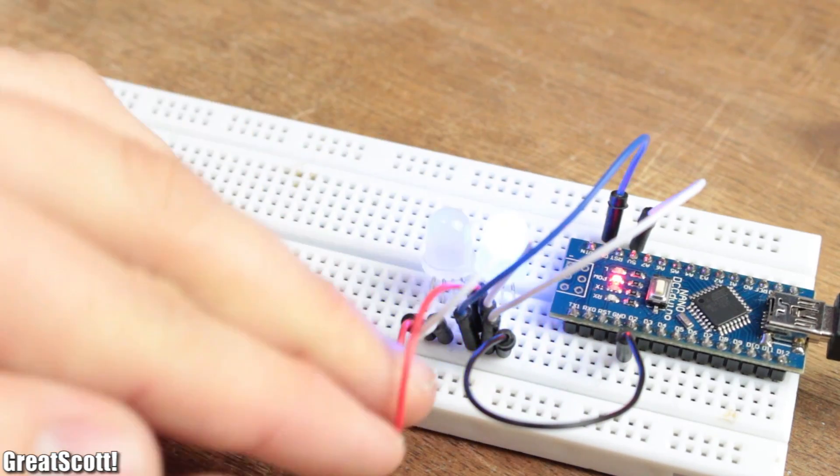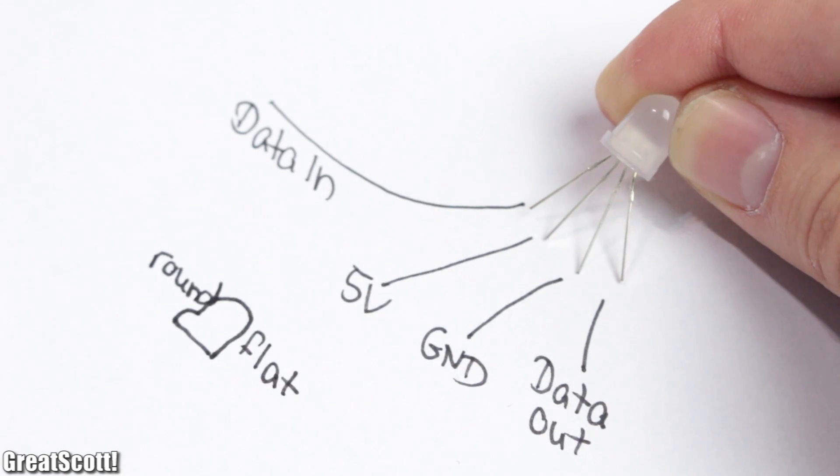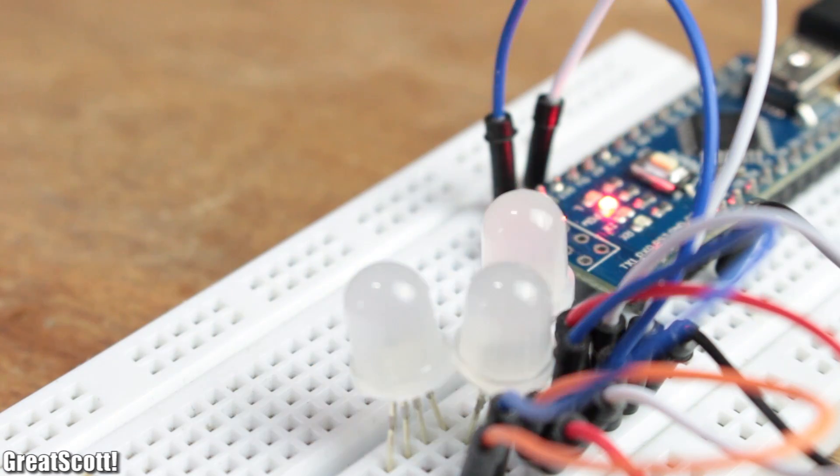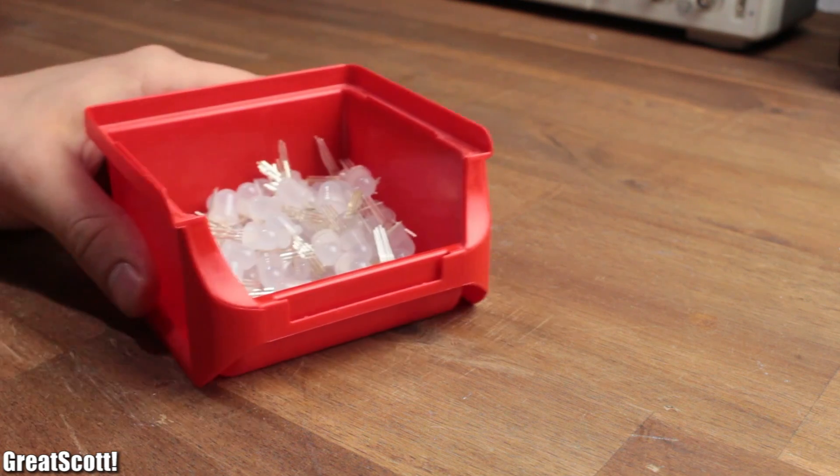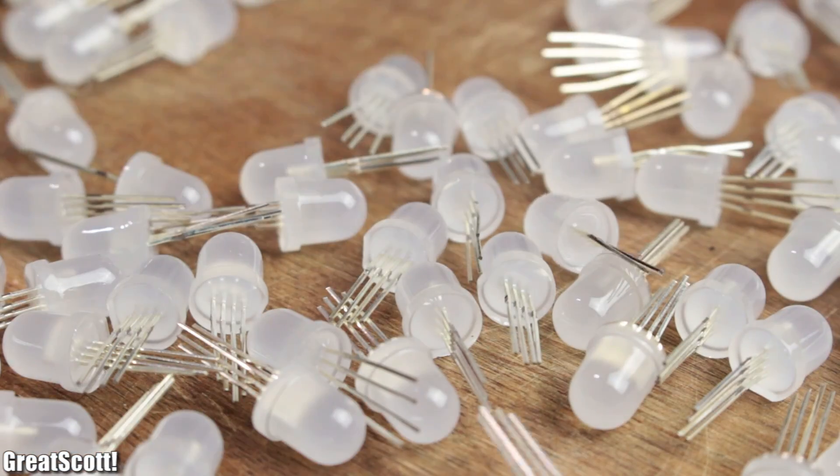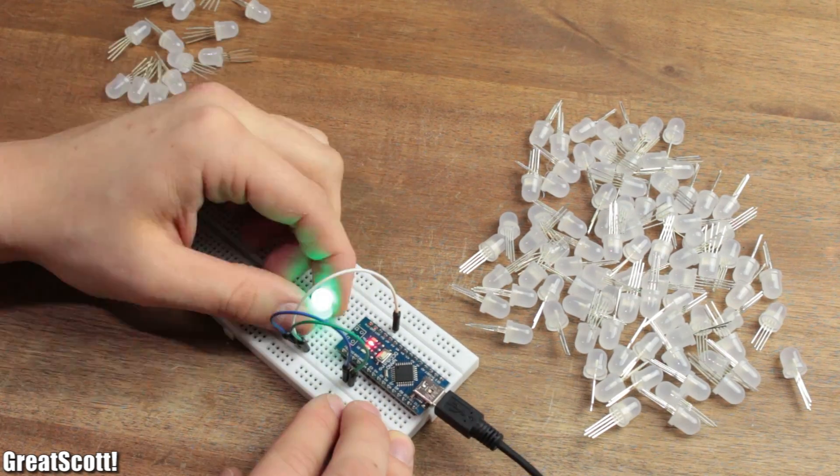By daisy-chaining the data out to the next data in, we can control a lot of them with only one digital pin of the Arduino. And of course, for a 5x5x5 cube, we're going to need 125 of them, which all need to be tested beforehand.